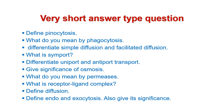Next is: give significance of osmosis. Next is: what do you mean by permease? Next is: what is receptor ligand complex? Next is: define diffusion. Next is: define endo and exocytosis, and also give their significance.